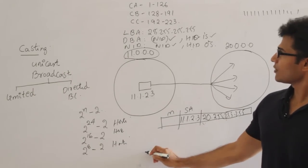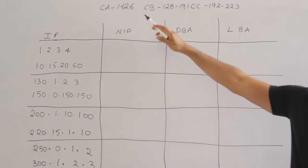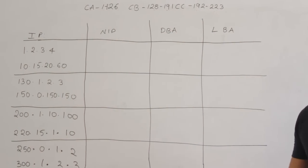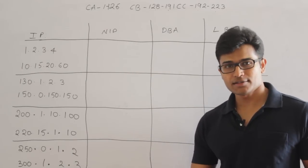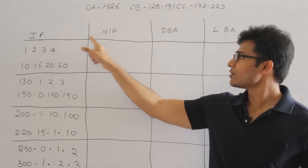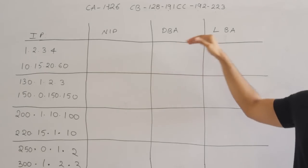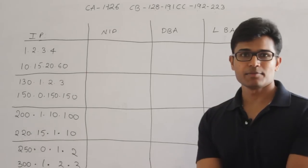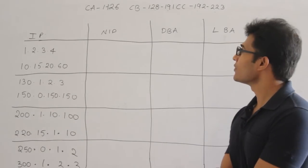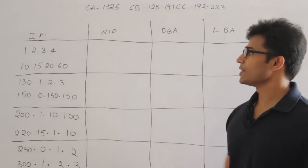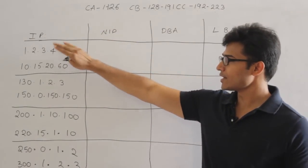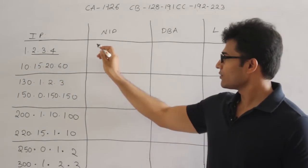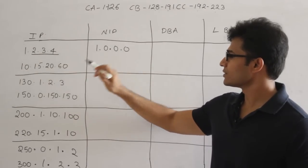Coming to subnetting, first know the class ranges: Class A is 1 to 126, Class B is 128 to 191, Class C is 192 to 223. Given any IP address, first identify its class, then find the network ID and directed broadcast address. For example, 1.2.3.4 — the first octet 1 falls in the Class A range, so the network ID part is the first 8 bits and the host ID is the next 24 bits. The network ID is 1.0.0.0.